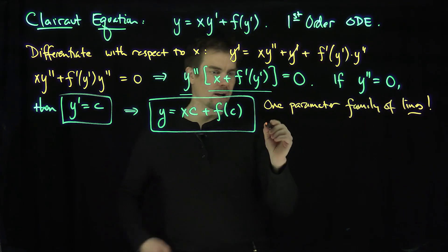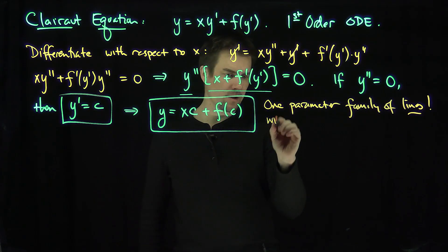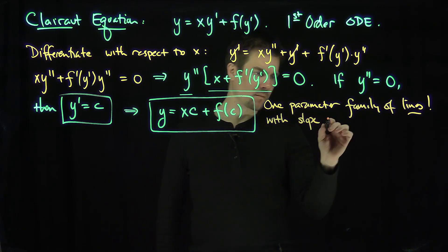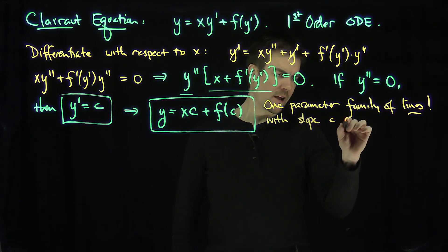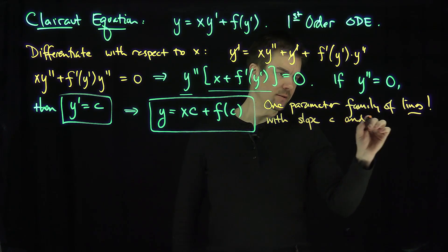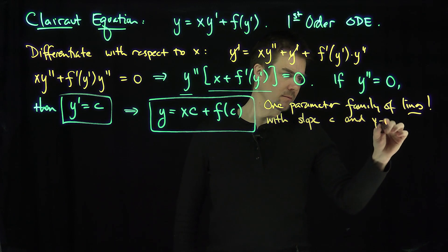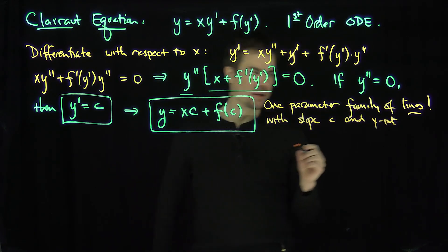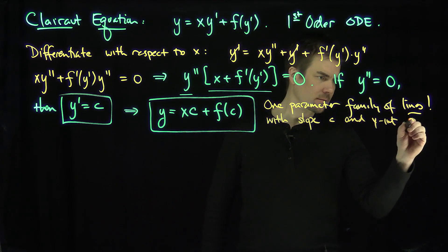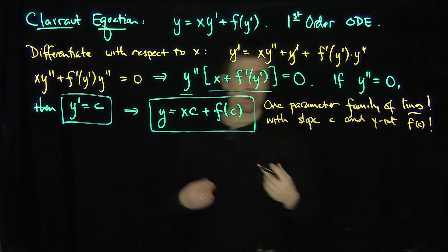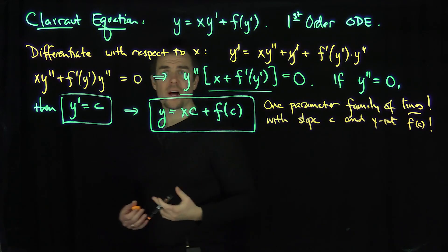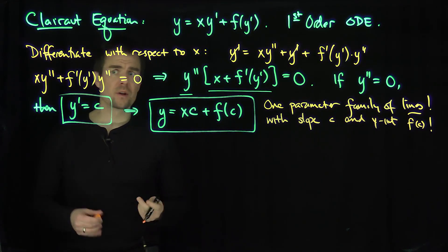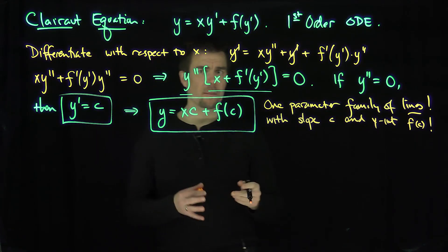These lines have slope c and y-intercept f of c. This one-parameter family of lines is the general solution of the Clairaut equation, but we've missed something.